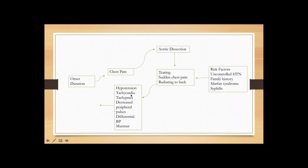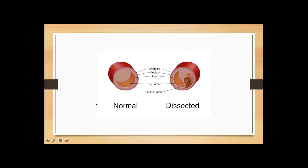Once you recognize the situation, order a CT scan of the chest, which will give you the final diagnosis of aortic dissection. You can also draw EKG and troponins while waiting for the CT scan — EKG may show some ST-T changes if the dissection is causing coronary ischemia, and troponins may or may not be elevated. Don't just assume the patient probably has MI — pay attention to the character and history of chest pain and risk factors. Don't miss this diagnosis because it is a life-threatening situation.